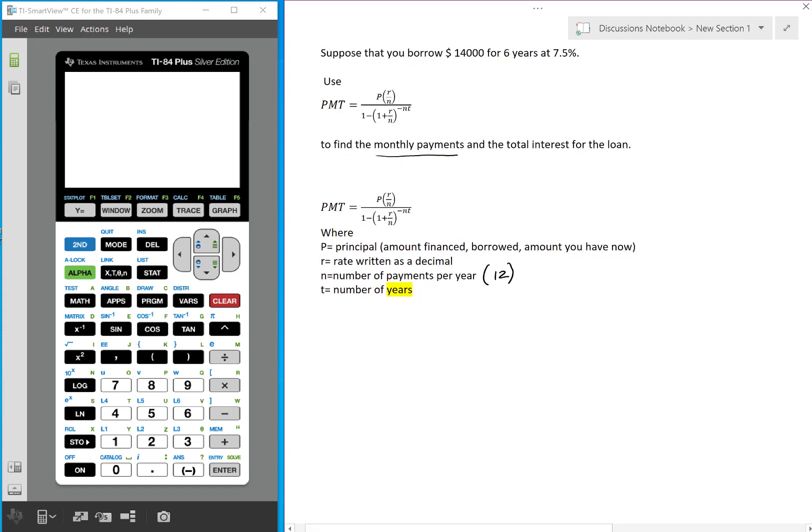So in our situation P is $14,000, T is 6 years. The interest rate is 7.5% which is 0.075. It's important to change it into a decimal. And we want to find the payment using the formula. And also we know N is 12 because it says monthly payments.